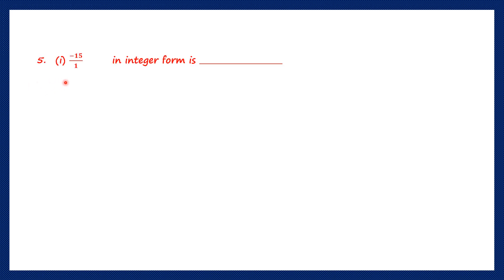Question 5, first one: minus 15 by 1. We have to write it in integer form. Integers are positive numbers, negative numbers, and 0. When you divide any number by 1, you get back the same number, so minus 15 by 1 is minus 15 itself.